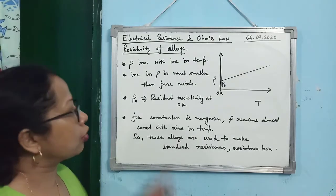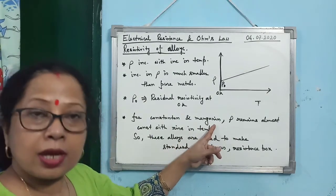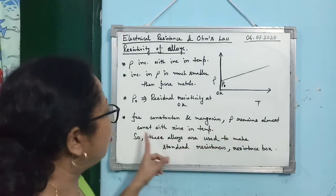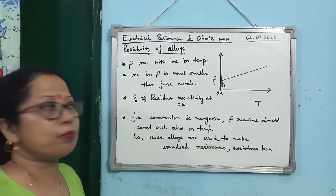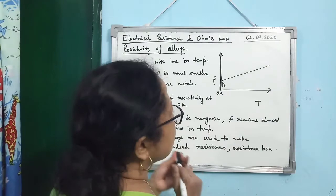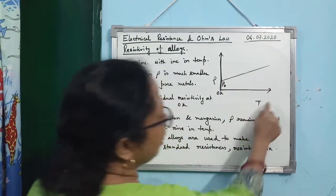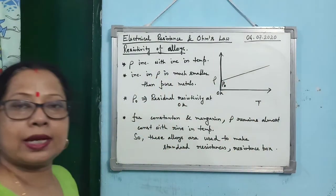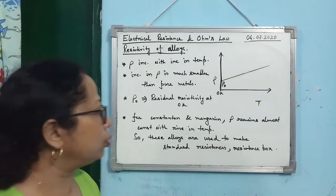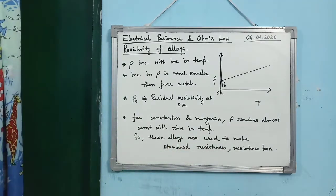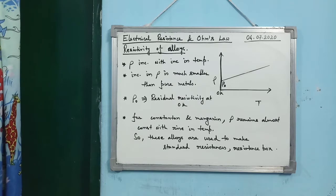For constantan and manganin — these are alloys — ρ remains almost constant with rising temperature, meaning this graph will be almost parallel to the temperature axis. Because of this property, these two alloys are used to make standard resistances or resistance boxes.